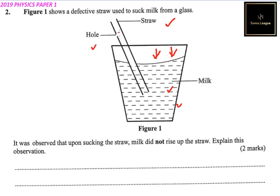But because of the hole, when you suck, the air sucked is replenished through the hole. This means the atmospheric pressure inside the straw is balanced with that outside the straw. So the hole balances the atmospheric pressure.